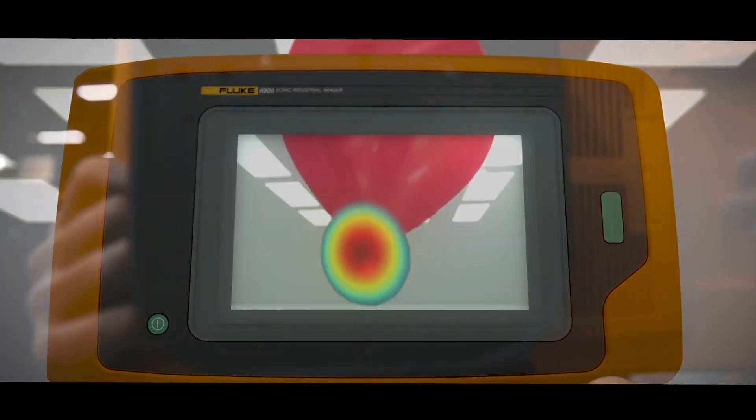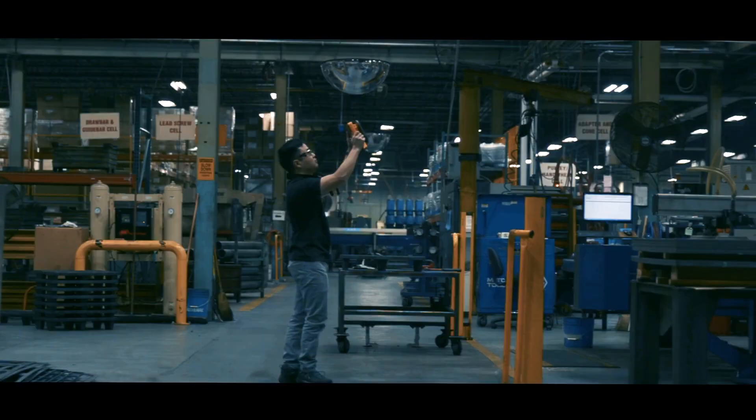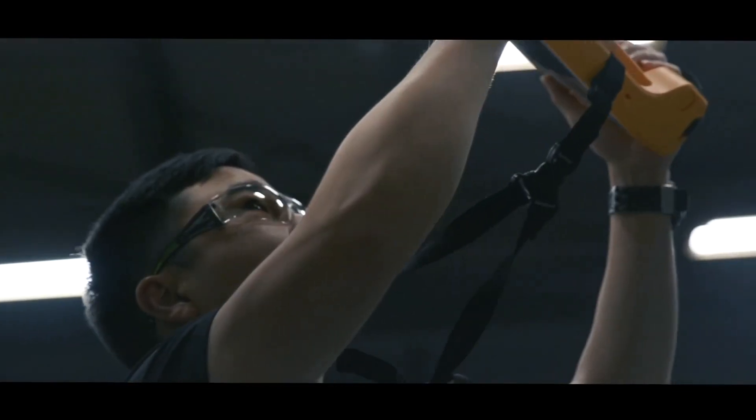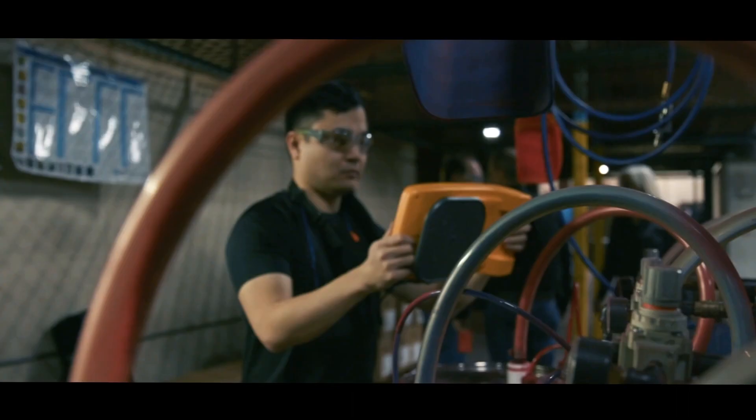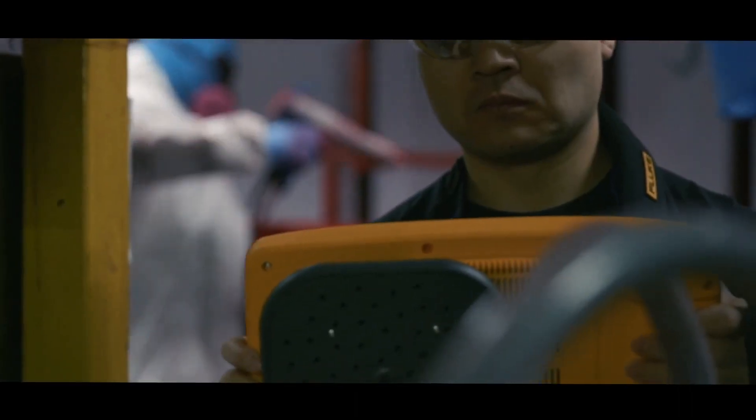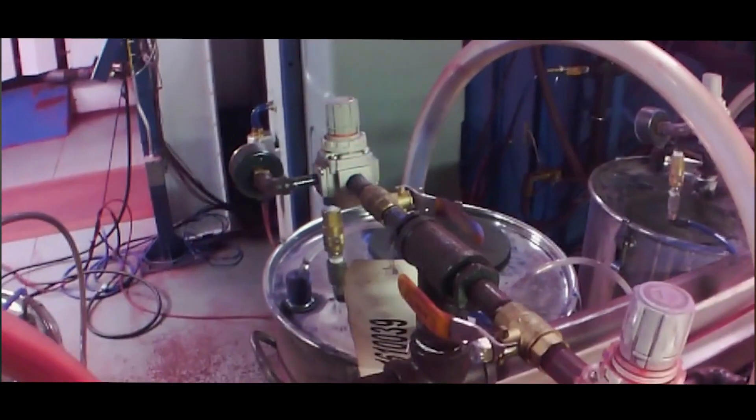If you rely on compressed air, you can now forget about the old messy way of finding leaks. The new Fluke Sonic Industrial Imager uses patented SoundSight technology. Enhanced scans to clearly see leaks you can't even hear.